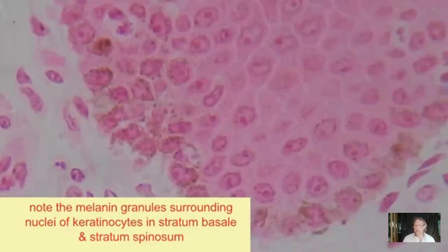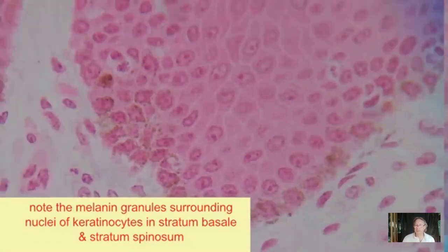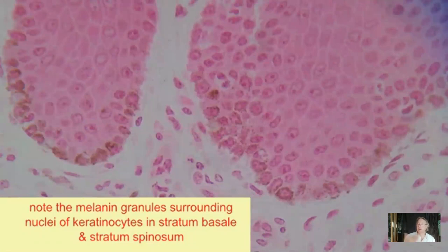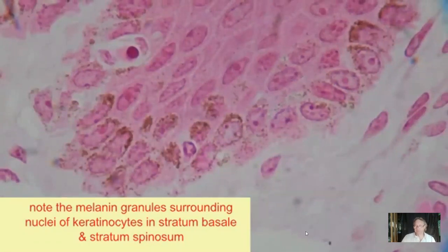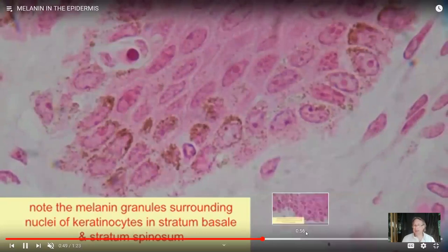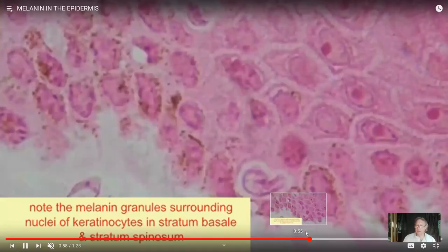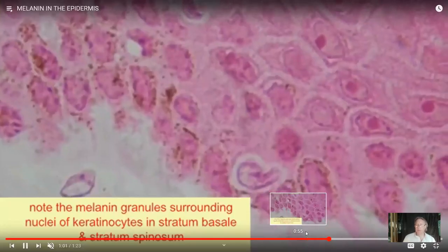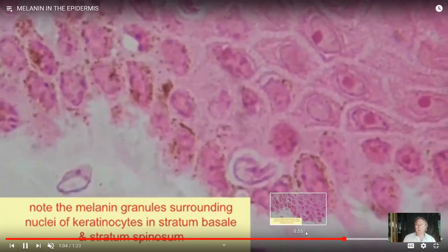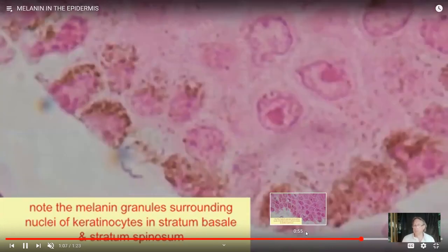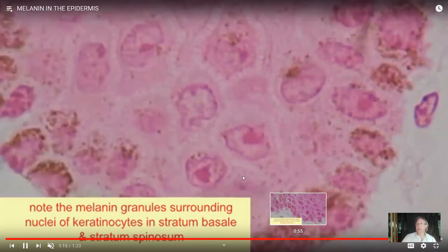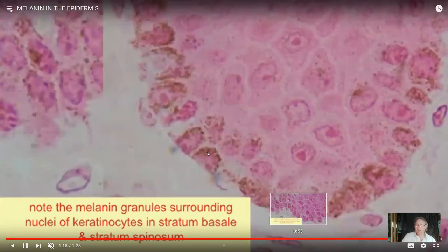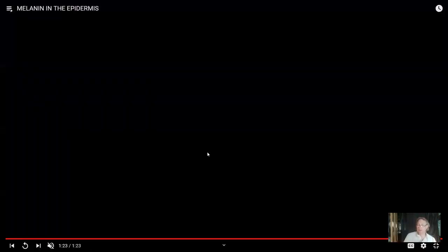The more melanin you have in your skin — whether from darker skin pigmentation or from a tan due to sun exposure — the more protection you have. Skin cancer is the most common cancer in humans; if caught in early stages it can simply be removed, but if not caught early it could travel throughout the body and cause a malignant cancer that could be life-threatening. Melanin protects us from skin cancer, which could potentially take our lives.